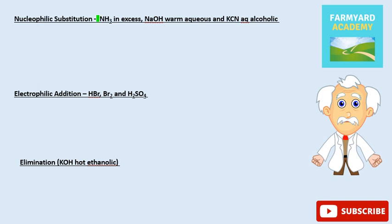We've put the reagents down. The first type of nucleophilic substitution is ammonia, which is in excess. The reason ammonia is in excess is to prevent further substitution from the substances that you form. You can also do nucleophilic substitutions with sodium hydroxide under warm aqueous and also using potassium cyanide aqueous alcoholic. So nucleophilic substitutions all involve haloalkane. We're just going to do a nice straightforward one, chloroethane.